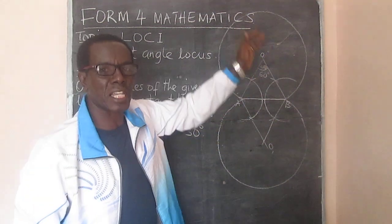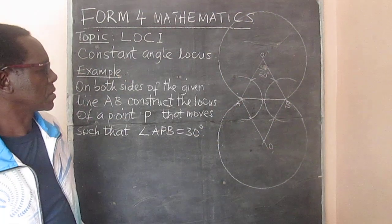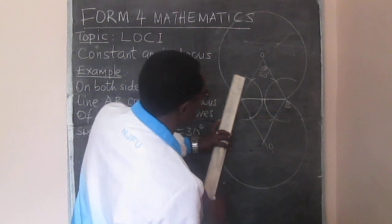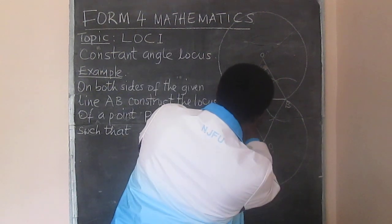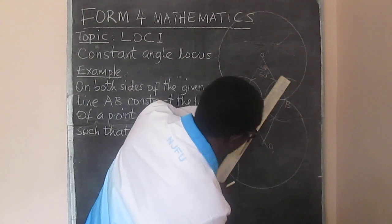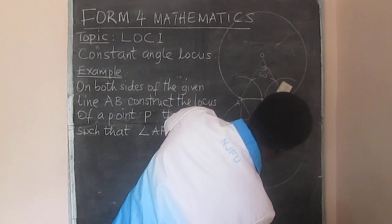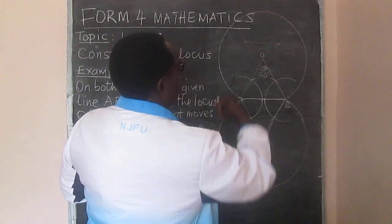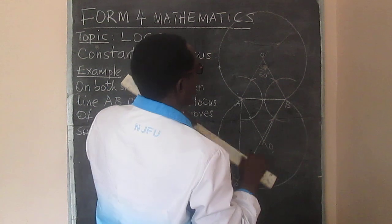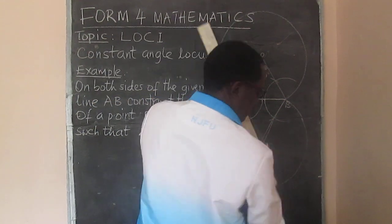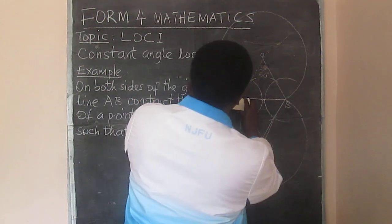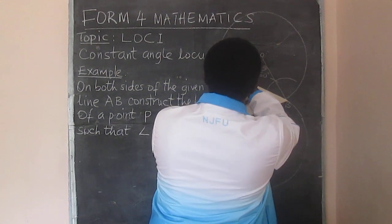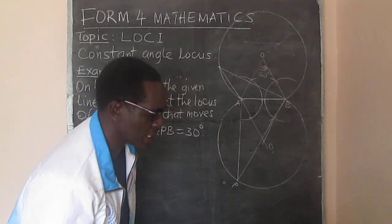We now have the locus on both sides of the line AB. We can see that if P is on this arc here — this is point P — and on the other side also, any point on this arc will give us P. And we can confirm that the angle APB will always be 30 degrees.